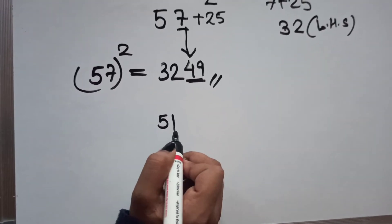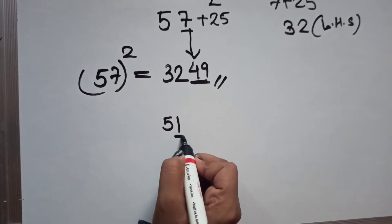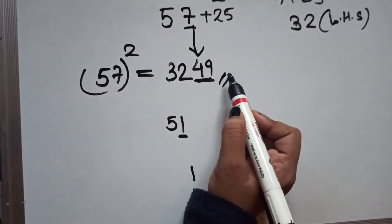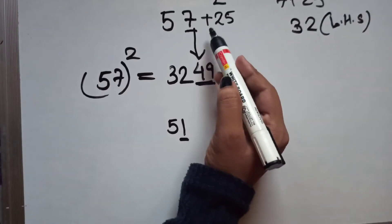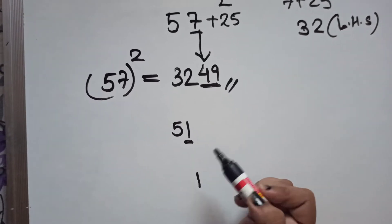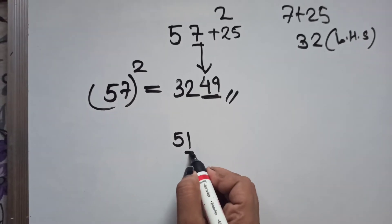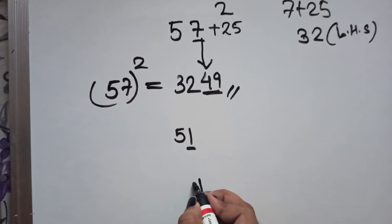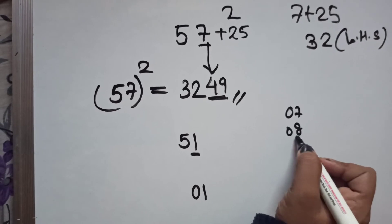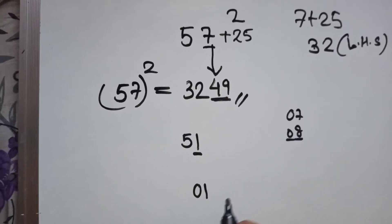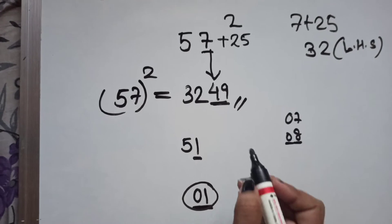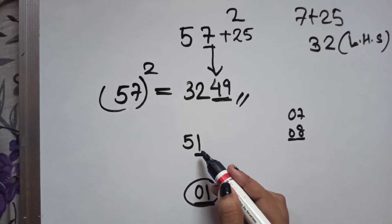For 51, the unit digit is 1 and 1² = 1, which is only one digit. You must write it as 01, because the right-hand side of the answer must always be two digits. So if the square of the unit digit gives a single digit, add a leading 0.